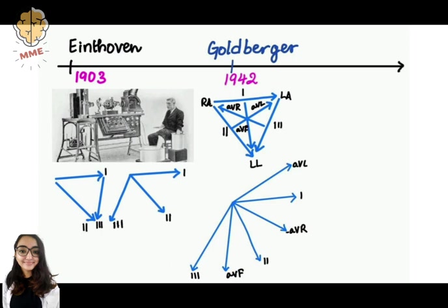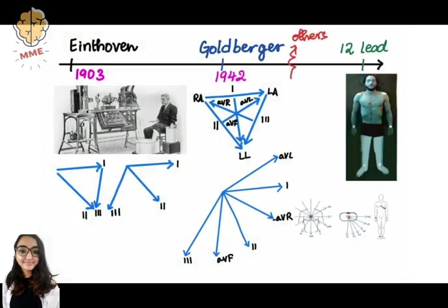And now coming to the most commonly used 12-lead ECG. The 12-lead ECG combines the lead systems from Einthoven, Goldberger, and Wilson, thereby providing information about vertical and horizontal axis.